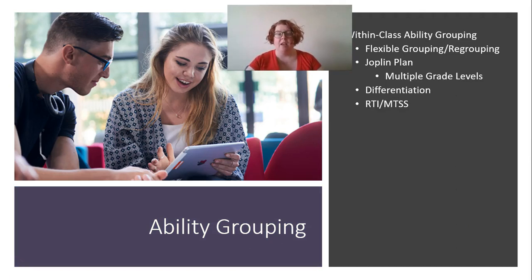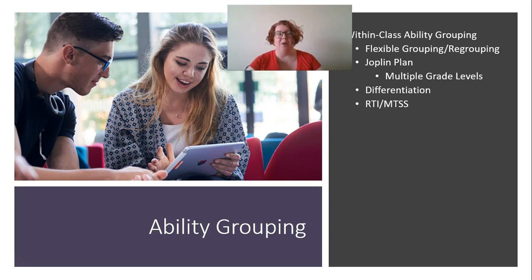Your textbook isn't always correct. We also have within-class ability grouping — grouping kids by ability at different times within your class. Flexible grouping or regrouping means you wouldn't keep kids in the same groups all year; you'd be continually assessing and redoing those groups as achievement levels change. The Joplin plan is a mix between within-class and between-class groupings, where you have multiple grade levels within a classroom, allowing advanced students to work above grade level and students needing support to work below grade level while remaining with their peers.